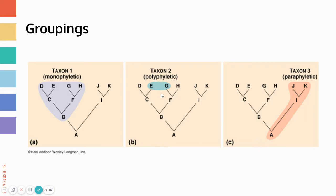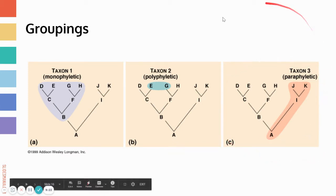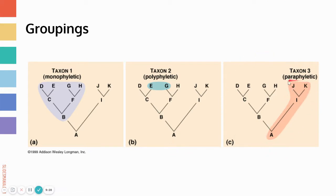Paraphyletic includes a common ancestor but only some of its descendants. For example, including node A but only selecting one of its branches — not every descendant — makes it paraphyletic. We'll practice a little more with this vocabulary in the coming weeks. This video was a follow-up on the introduction to tree thinking video posted earlier, so I'll see you guys in a bit.